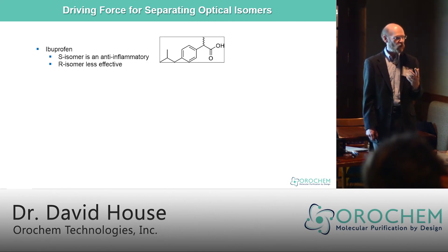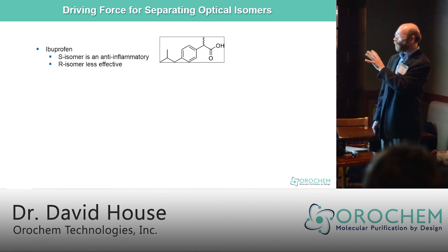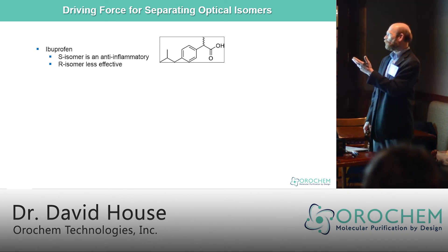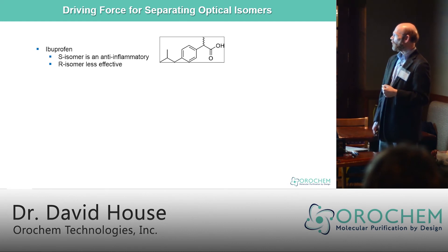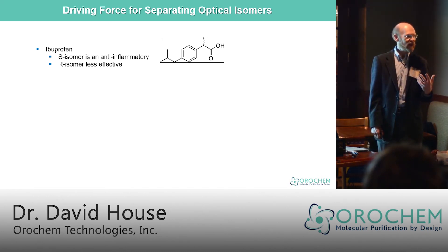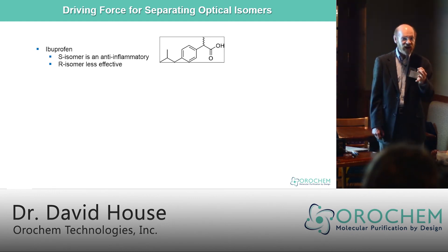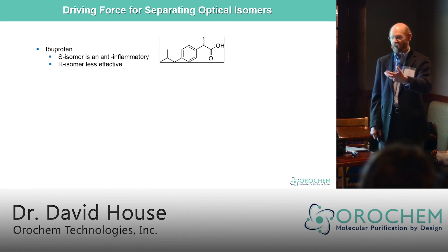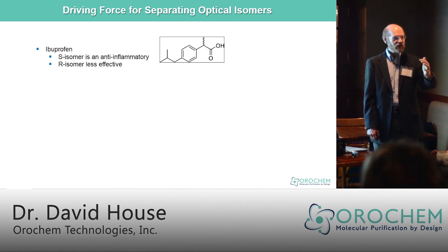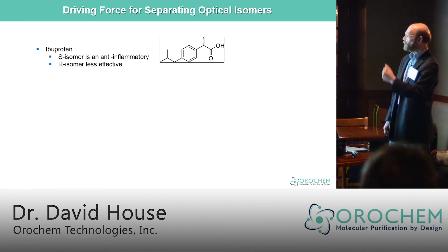There's a strong driving force for purifying optical isomers. Ibuprofen, for example — the S isomer is an anti-inflammatory, the R isomer has almost no effect. Basically, you're wasting half your material. If you can racemize that, then do another separation and recover the S isomer, you can ultimately get all your product. Otherwise, 50% is lost.